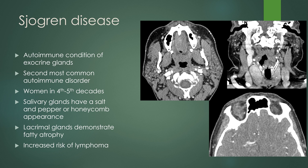Sjogren's disease is an autoimmune condition of the exocrine glands and is the second most common autoimmune disorder. It affects women in their fourth and fifth decades. The salivary glands have a salt-and-pepper or honeycomb appearance, with rounded hyperdense areas and fatty strands in between. The lacrimal glands demonstrate fatty atrophy, making them difficult to see on CT or MRI. This is an important disease process because these patients have an increased risk of lymphoma, and imaging can suggest the diagnosis with this abnormal salivary gland appearance and absent lacrimal glands.